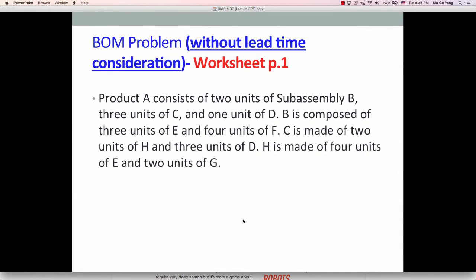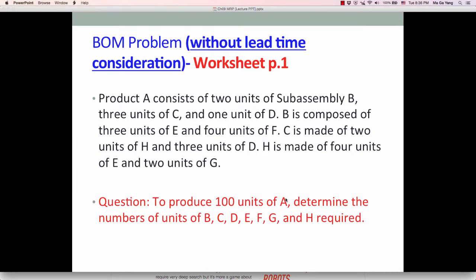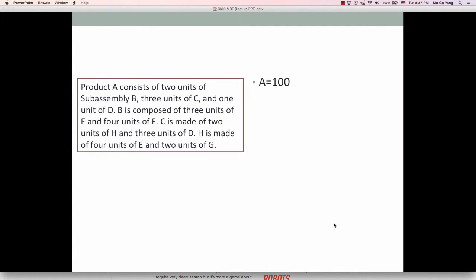Let's go to another problem. For example, product A has these components, subassemblies, and parts. And question is to produce 100 units of A, determine the number of units of B all the way to H required. Again, without lead time consideration. So 100 end item A. In this case, we don't have to draw the BOM product structure tree. Directly, we can calculate how many items are required based on 100A.